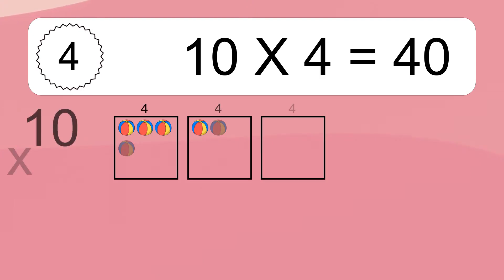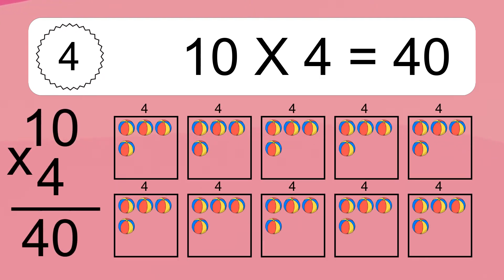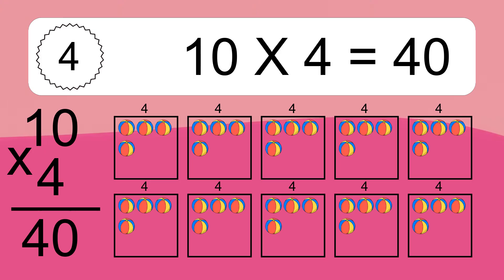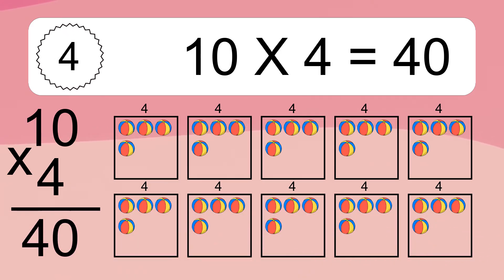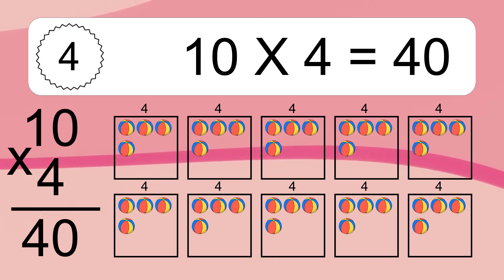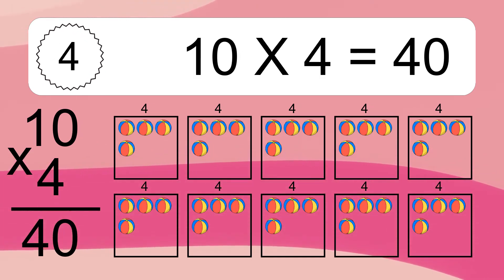10 times 4 equals what? 10 times 4 equals 40. We have 10 boxes, and each box has 4 colorful balls inside. If you count all the balls in all the boxes together, you will have 10 times 4 balls. This equals 40 balls.